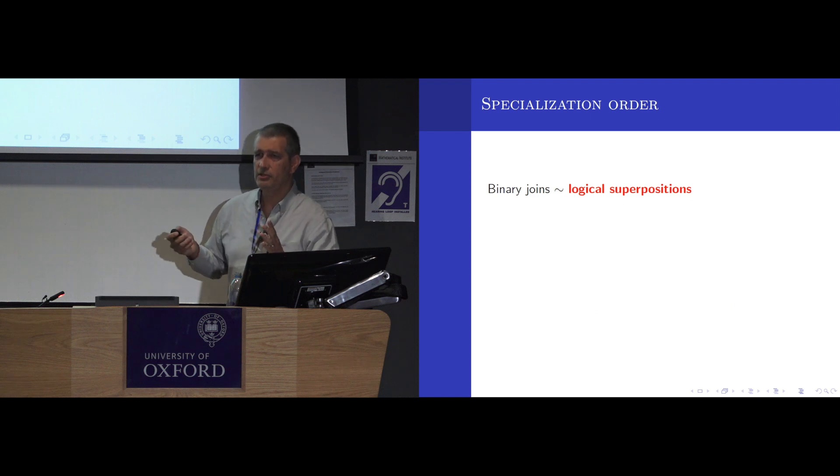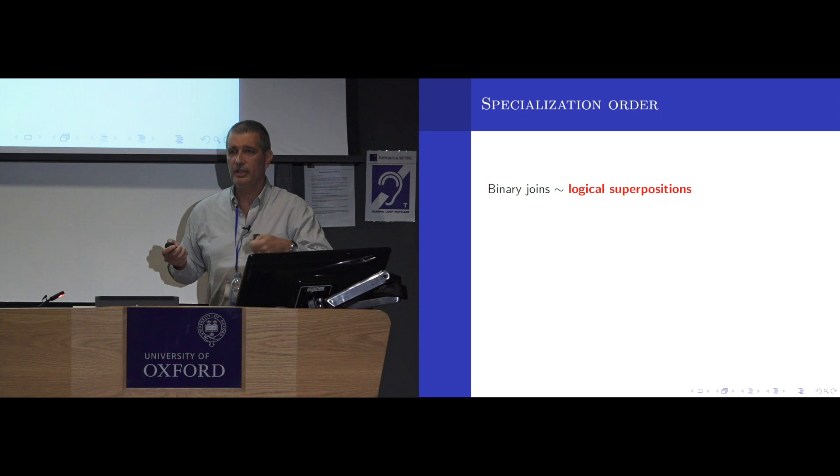So all this said, I'll take these binary joins to be so-called logical superpositions. They're like quantum superpositions without numbers. So there's not numbers saying how much qualia belongs to superposition. It's either there or not.